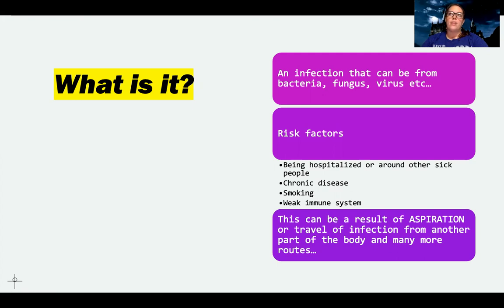Pneumonia can be caused or start from a lot of different places. So it can be from aspiration, which means that maybe I'm lying down too flat or maybe I just have a really weak airway, and so food and stuff goes in the wrong place and leads to infection. Food or gastric contents like stomach juice can also cause that as well.